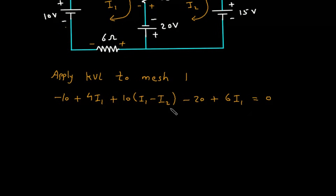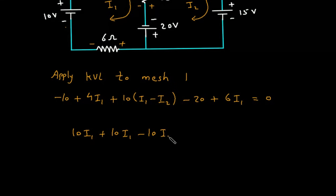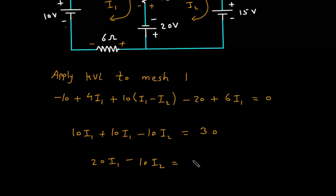Simplifying: 4 plus 6 gives 10I1, then plus 10I1 minus 10I2 equals 30. So 20I1 minus 10I2 equals 30. Let us assume this is equation number 1.